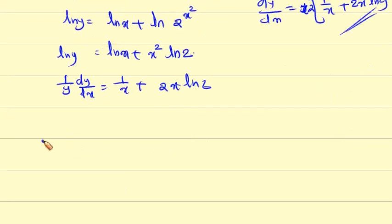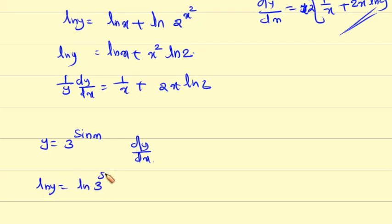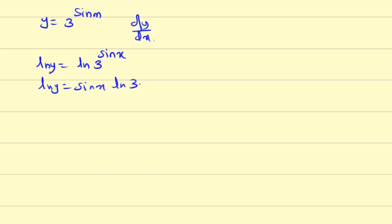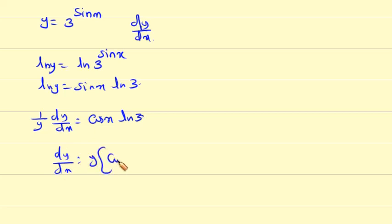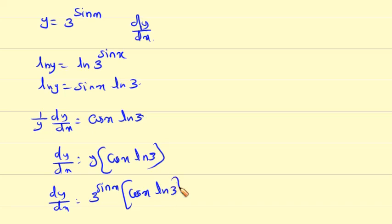Next problem. y equal to 3 raise to sin x. Find dy by dx. Since sin x is a power, apply ln: ln y equals ln 3 raise to sin x, that is ln y equals sin x into ln 3. Differentiating both sides: 1 by y, dy by dx equals cos x ln 3. Therefore dy by dx equals y into cos x ln 3, that is 3 raise to sin x into cos x ln 3.